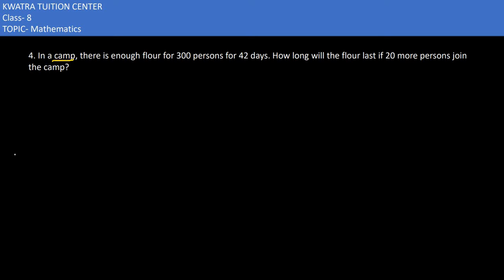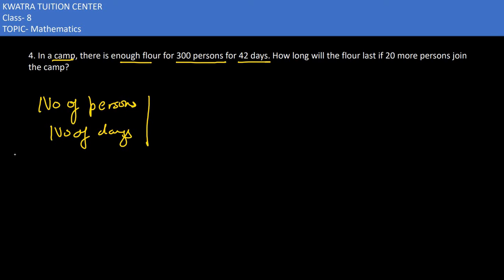Starting with the fourth part. It says in a camp there is enough food for 300 persons for 42 days. We will make a table first with number of persons and number of days. In the first case, number of persons is 300 and number of days is 42. The question asks how long will the food last if 20 more persons join the camp, so the number of persons becomes 320.